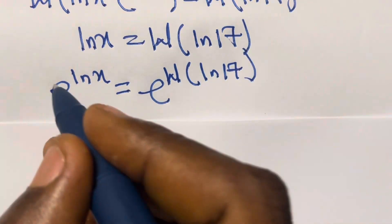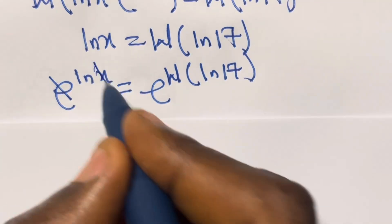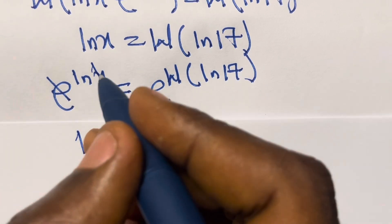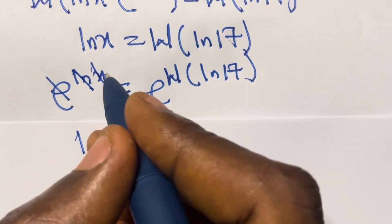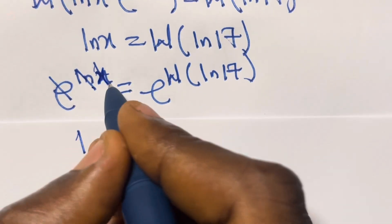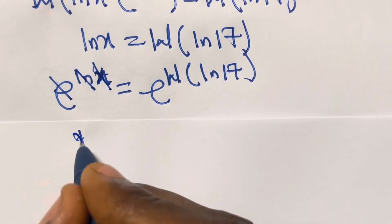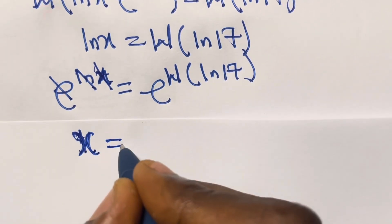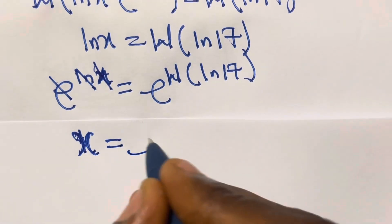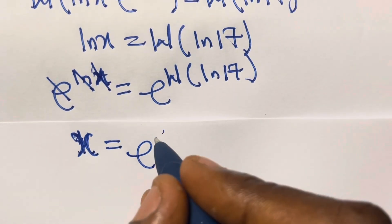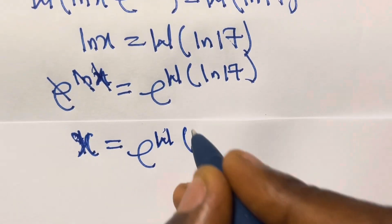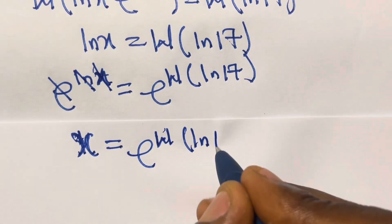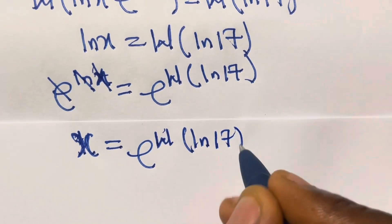So we introduce the exponential to both sides to get rid of the ln. We have e raised to the power ln x equals e raised to the power of Lambert W function of ln 17. The left side simplifies to x, so x equals e raised to the power of Lambert W of ln 17.